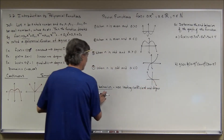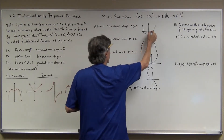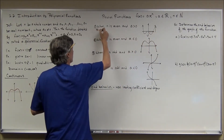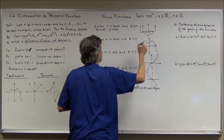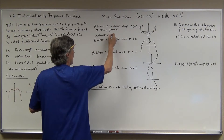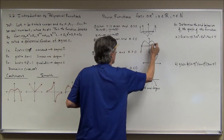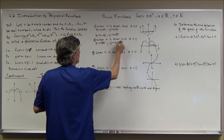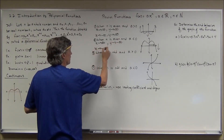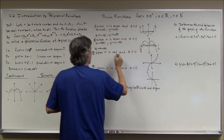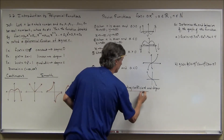What happens on the ends of the graph is called end behavior, and we use the leading coefficient to describe it. For example, when n is even and a is positive: as x approaches infinity, y approaches infinity; and as x approaches negative infinity, y also approaches positive infinity. When n is even and a is negative: as x approaches infinity, y goes to negative infinity; and as x approaches negative infinity, y also goes to negative infinity.